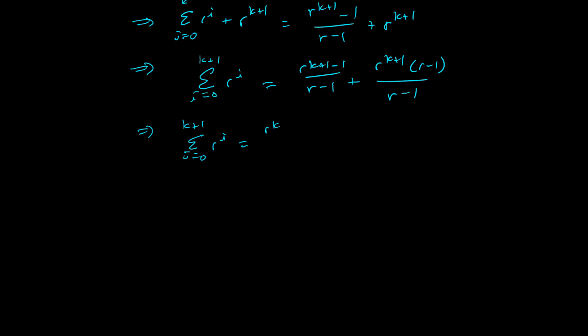On the right-hand side, I'm just going to distribute a few things here. So when I distribute r to the k plus 1 across r minus 1, when I multiply it times r, I get r to the k plus 2 power, and then minus r to the k plus 1 over r minus 1.